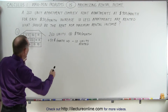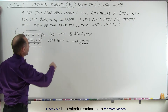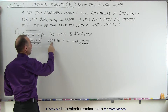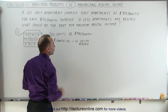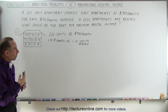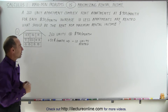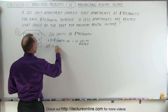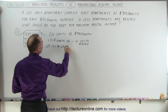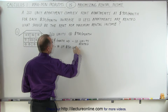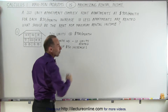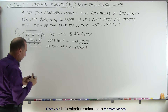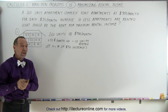Starting with a diagram, we have an apartment building with 260 units renting at $900 per month, and for each increase of $50 per month there will be 10 fewer units rented. Let x represent the number of $50 increases.